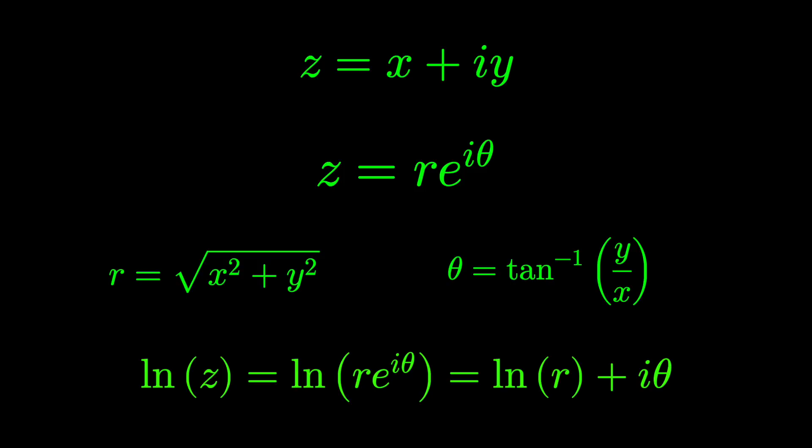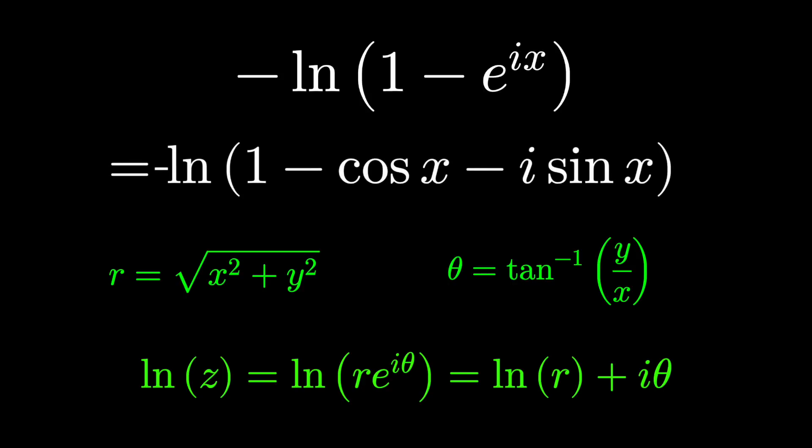So we need to figure out what's r and what's theta for our complex value, in this case, 1 minus e to the ix. We need to figure out what's the real part and what's the imaginary part. Fortunately again, Euler's formula comes to the rescue, e to the ix is cosine x plus i sine x,